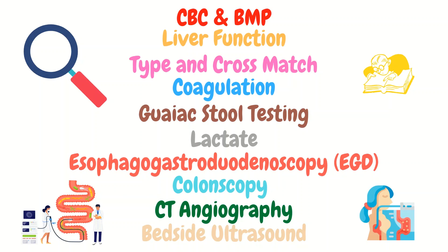Providers can also perform bedside abdominal ultrasounds or order CTs to help determine where the bleeding is coming from. However, among the most helpful diagnostics is the EGD, since it can simultaneously be used to treat the patient — whether through variceal banding, clipping, or other methods available to the GI doctors who perform it. If the EGD is not successful but the CT showed where the bleeding is coming from, interventional radiology can perform embolization, which essentially means cutting off blood supply to the bleeding area.